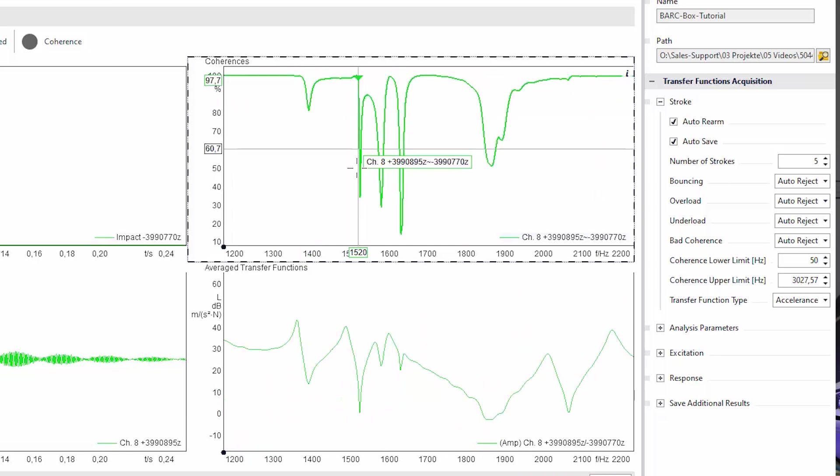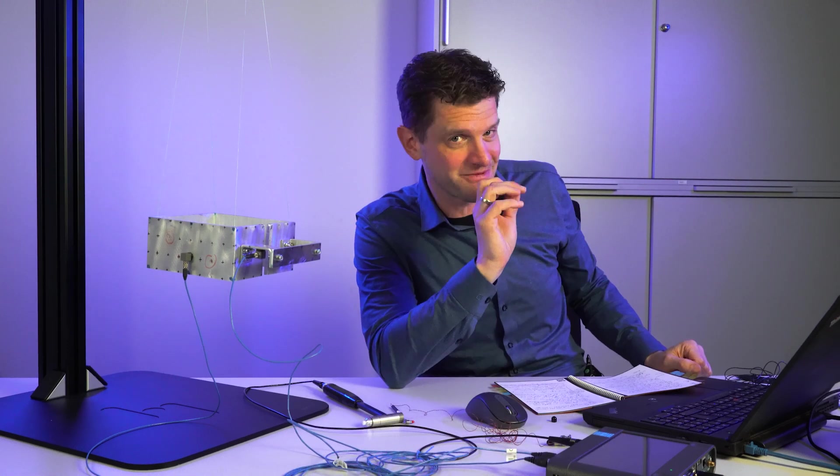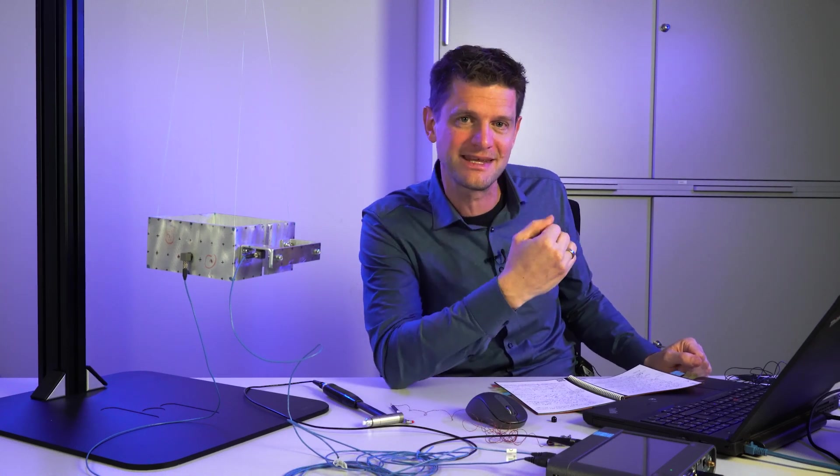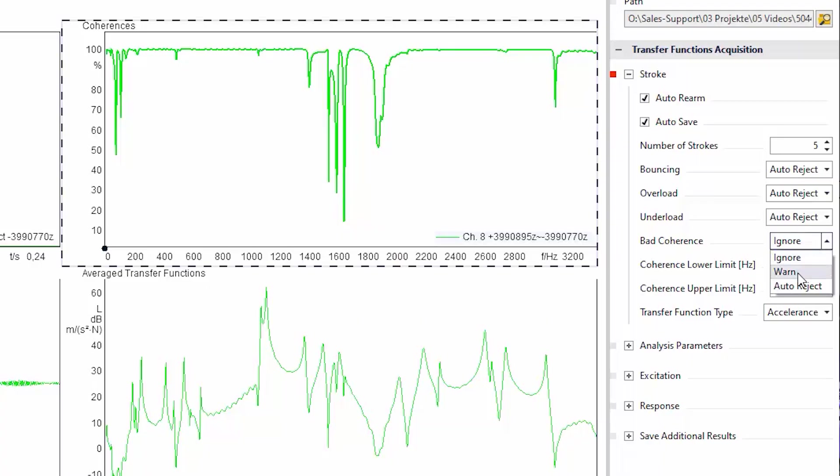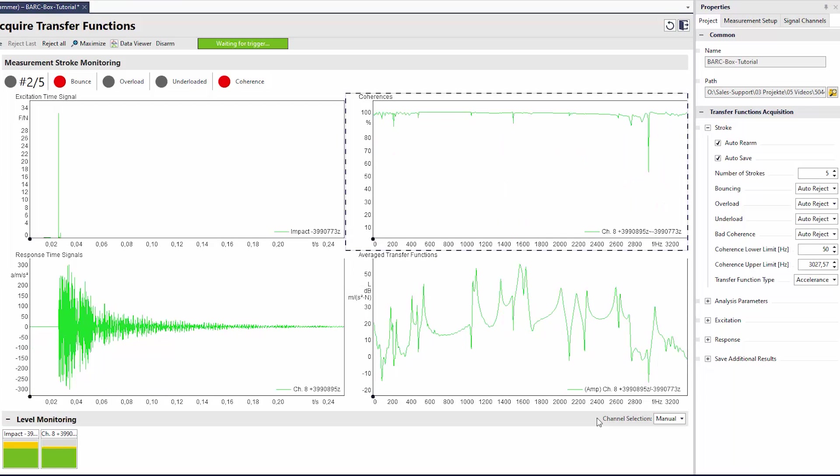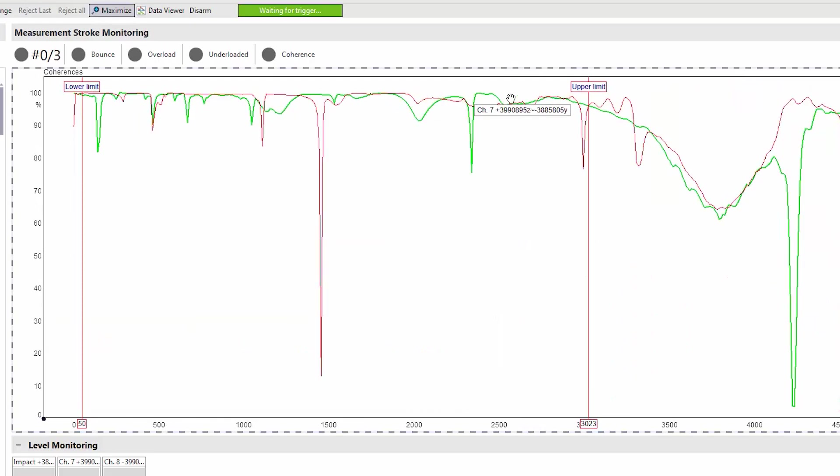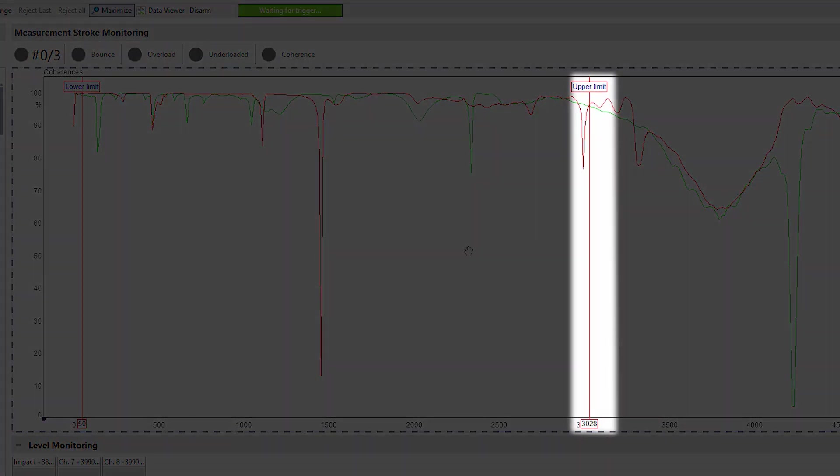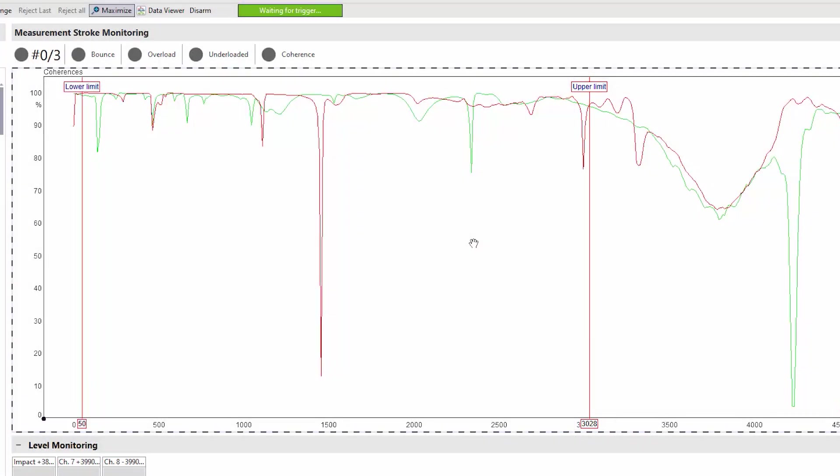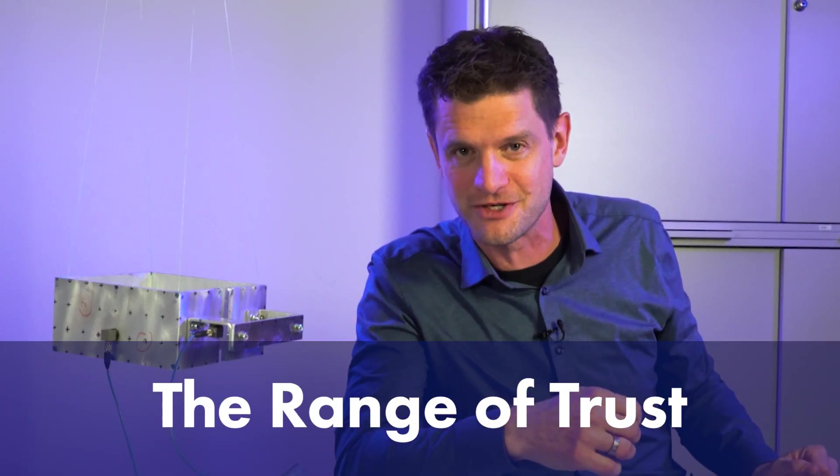But sometimes the coherent signal just drops always in front of a resonance peak. So it's difficult to see if this is a bad signal or just a normal signal to my object. So therefore again there's an automatic evaluation included in your software to activate the coherence check. So all the strikes that are good will be accepted. If you have bad coherence it will automatically reject it. So you're faultless. We see in this software here we have a lower limit here of 50 Hz and we can use our measurement up to 3000 Hz. This is the upper limit automatically evaluated by the software. In this area we can analyze our structure. This is what we call the range of trust.